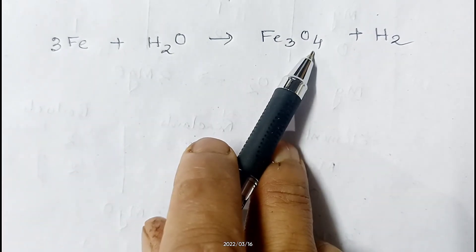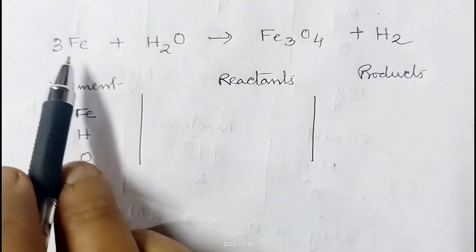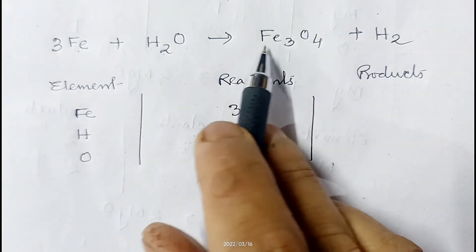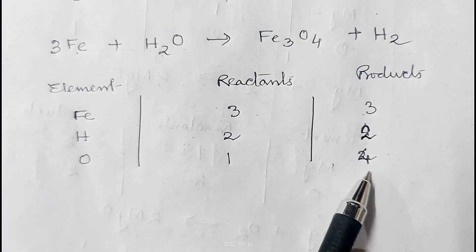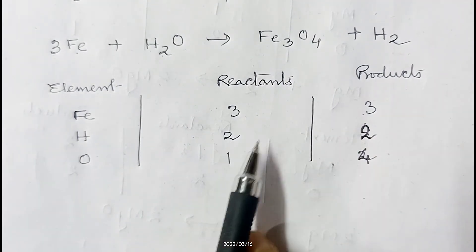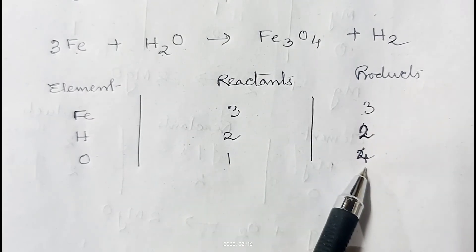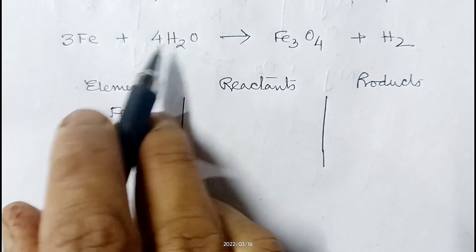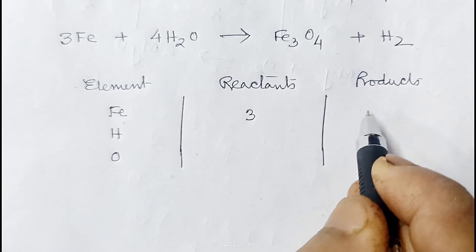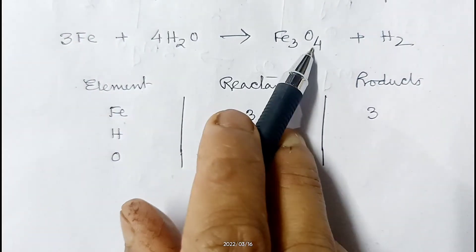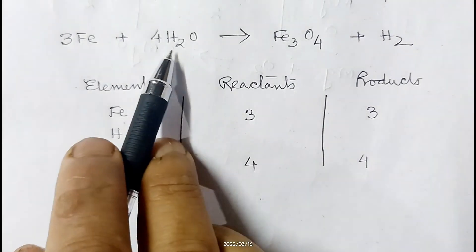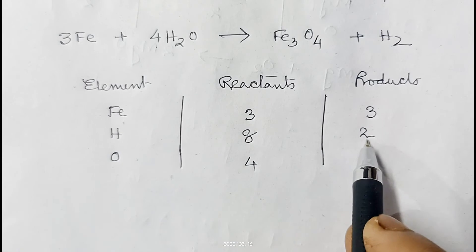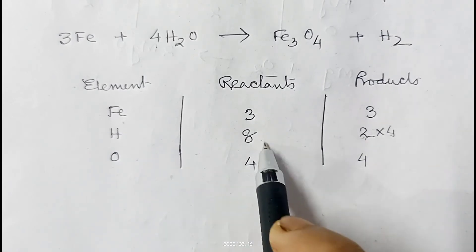But oxygen is not yet balanced. Counting again: reactant side — iron 3, hydrogen 2, oxygen 1; product side — iron 3, oxygen 4, hydrogen 2. Iron is balanced, hydrogen is balanced, but oxygen is not — product side has 4 and reactant side has 1. So we multiply H₂O by 4, giving: 3Fe + 4H₂O → Fe₃O₄ + H₂. Now oxygen is 4 on both sides, but hydrogen becomes 8 on the reactant side versus 2 on the product side.